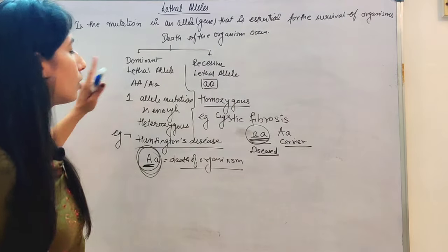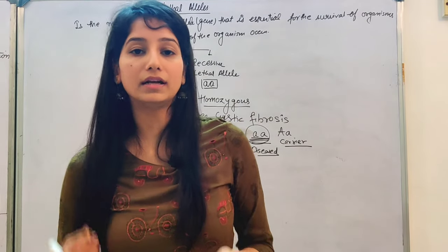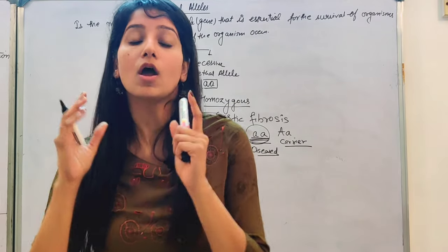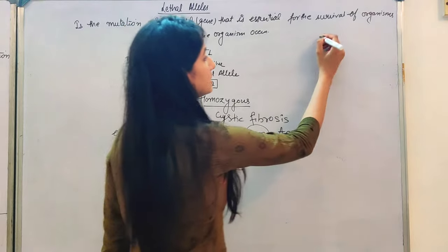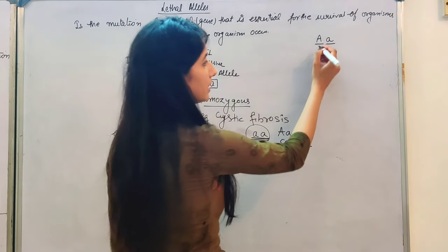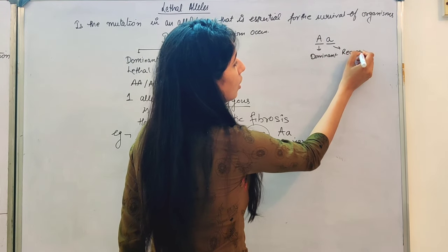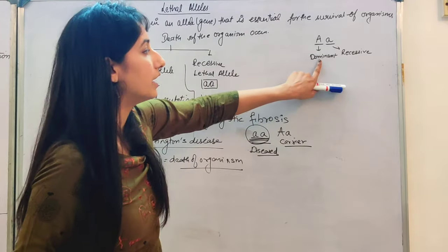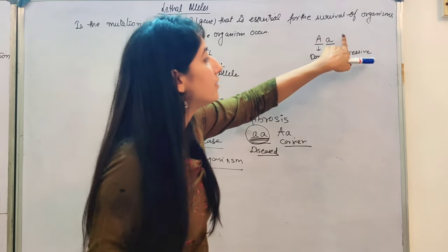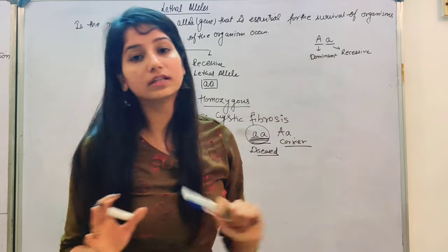Now, you must not be confused that a dominant lethal allele always occurs on a dominant allele and a recessive lethal allele always occurs on a recessive allele. If we consider two alleles — one dominant and one recessive — we might think a mutation in the dominant allele makes it a dominant lethal allele, and a mutation in the recessive allele makes it a recessive lethal allele. But that is not the condition.